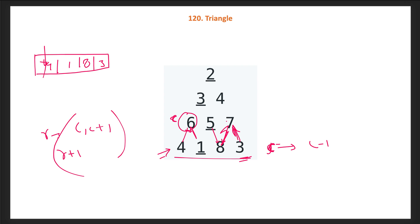At cell 6 we check minimum of 4 and 1, giving 1, so 6+1=7. At cell 5 we check minimum of 8 and 1, which is 1, so 5+1=6. At cell 7 we check minimum of 3, giving 7+3=10. Going further up, at 3 we take minimum of 7 and 6, which is 6, so 3+6=9. At 4 we take minimum of 6 and 8, which is 6, so 4+6=10. Finally at 2 we take minimum of 9 and 10, which is 9, so 2+9=11. The final answer at index 0 is 11.